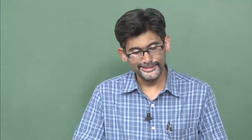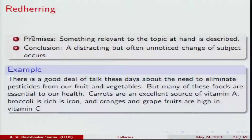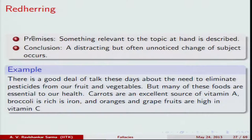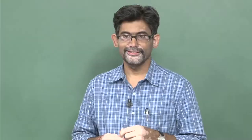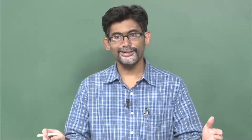In red herring arguments, the structure is as follows: the premises describe something relevant to the topic at hand, then the subject matter is changed, and in the conclusion a distracting but often unnoticed change of subject occurs, from which a different kind of conclusion follows. Let us consider a simple example to see where the arguer tries to draw the reader or listener off track.